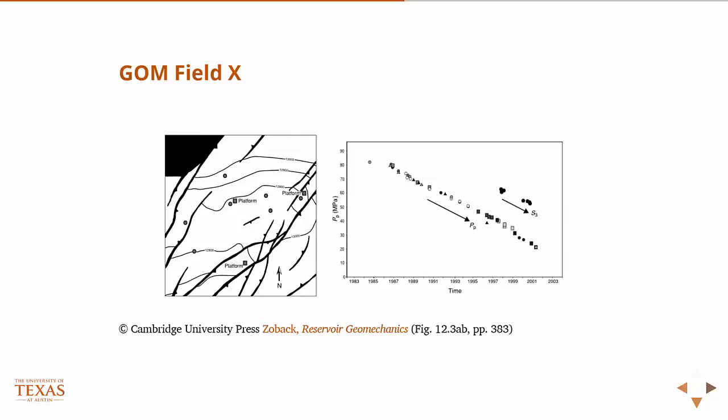So this is that field, and a couple of observations. You sort of need the two plots together. This is a map of the field, and there are multiple platforms in the Gulf of Mexico. The circles, squares, and triangles plotted along this line all correspond to different wells in that field.